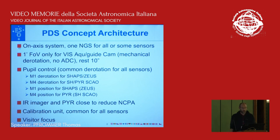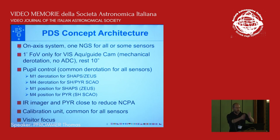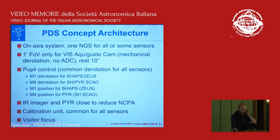It's an on-axis system with one natural guide star for all or some of the sensors. We will run some very stringent use cases to determine which sensor really has to run at what time, and maybe all of them run at the same time. The infrared imager and pyramid are placed very close to reduce the non-common path errors, because in the end 70% Strehl in K band is what we have to show — this is what is promised.